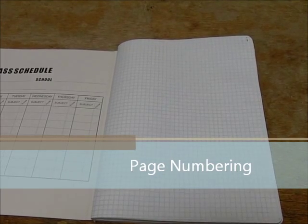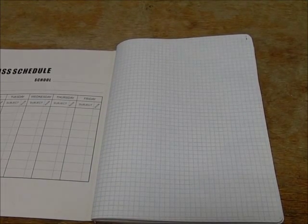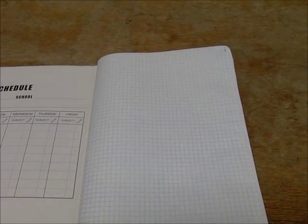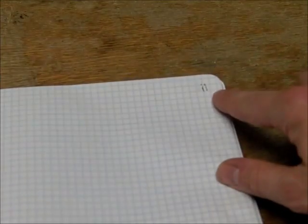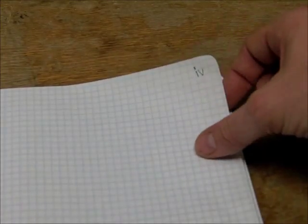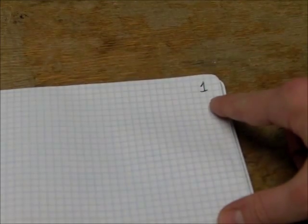I've already started to page number this book. Let's take a look at how I've page numbered it. Since I'm right-handed, I use the upper right-hand corner. If you're left-handed, you'd be using the other side of the paper. In the upper right corner, I wrote down I. For the second page, I did II. Third page, III. Fourth page, IV. Fifth page, V. Sixth page, VI. Seventh page is the number 1.